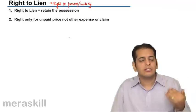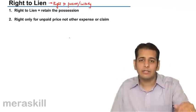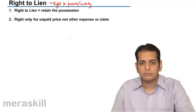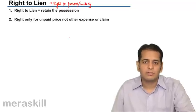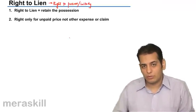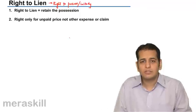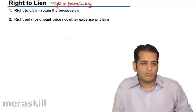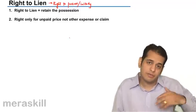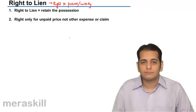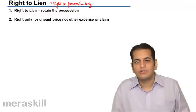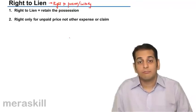This right is available only for the unpaid price. Whatever damages or losses the seller incurs — for example, if he has to keep goods because the buyer is not paying, and he incurs storage or warehouse charges — he cannot exercise the right of lien over goods because of such losses. He must put a claim of damages against the buyer instead.